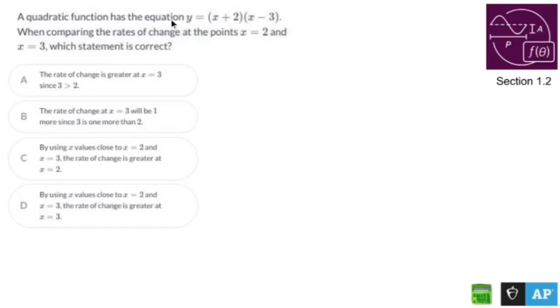A quadratic function has the equation y equals, oh it's factored, x plus 2 times x minus 3. When comparing the rates of change at the points x equals 2 and x equals 3, which statement is correct?